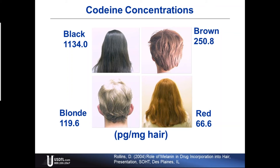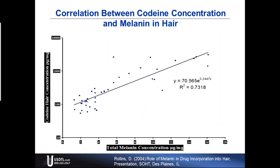They further analyzed each specimen for the concentration of melanin, the pigment. The concentration on the left is the concentration of codeine found, and the x-axis along the bottom is the total melanin concentration. As the concentration of melanin goes up, the concentration of codeine goes up, and it follows the best-fit line rather well, characterized by an R-squared value of 0.73 — a very strong effect size. In layman's terms, 73% of the codeine concentration is explained by the concentration of the pigment. That's a very strong variable.